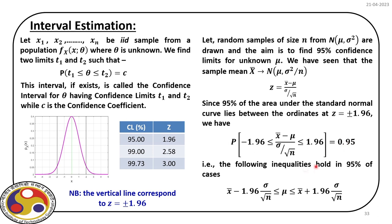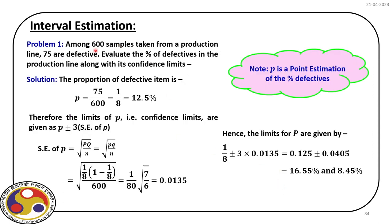From that, we can solve the inequality and find out the 95% confidence limit for the population mean. For example, among 600 samples taken from a production line, 75 are defective. We need to evaluate the percentage of defectives in the production line with its confidence limits. The percentage of defectives, small p, is 75 out of 600, which is 12.5%.